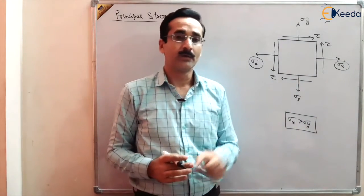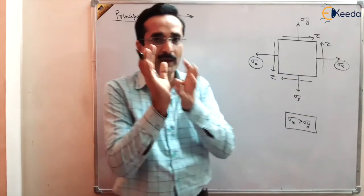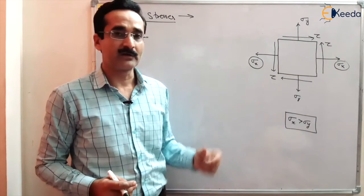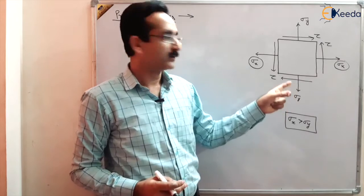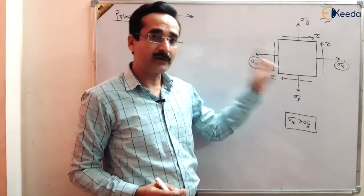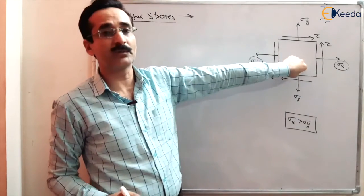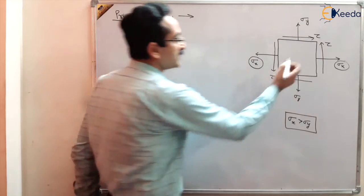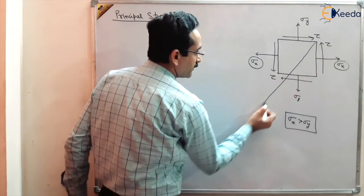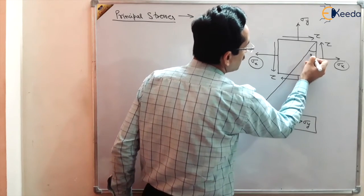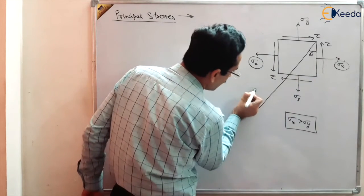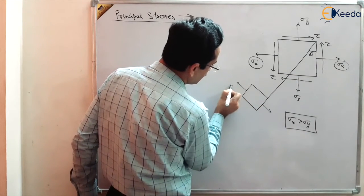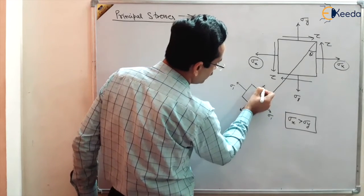But this is not so. Because in this stress element, there may be any plane on which the normal stresses are still higher compared to the applied Sigma X. There are chances that there may be a plane in this stress element at a certain angle theta, at which the normal stresses are much higher than the applied stresses. And that plane — I am showing it here — is where stresses Sigma 1 and Sigma 2 act.